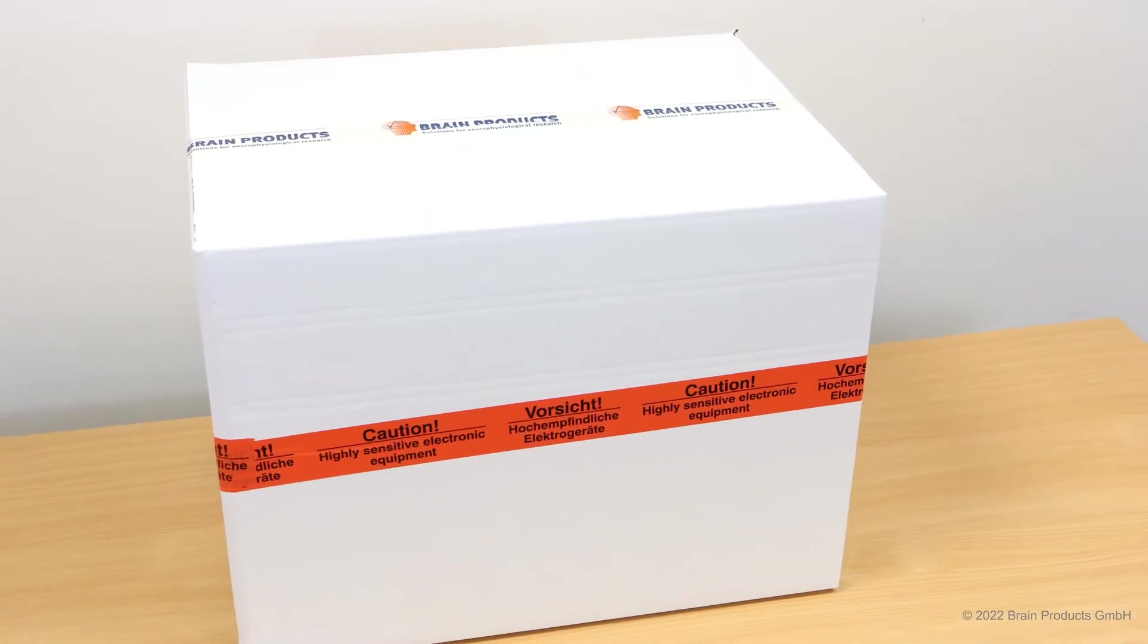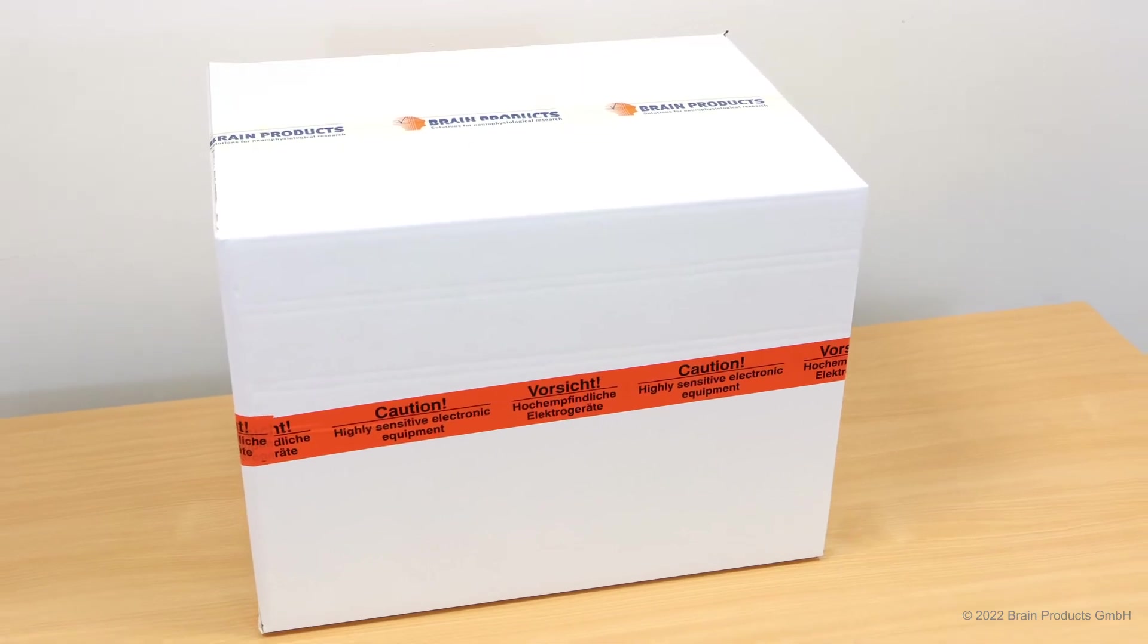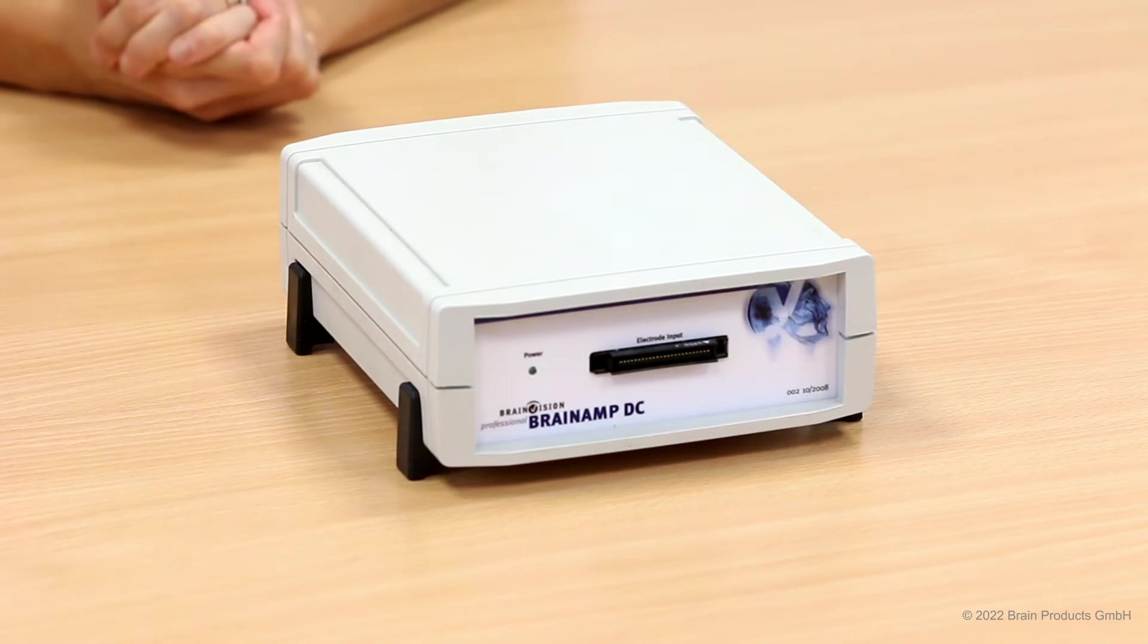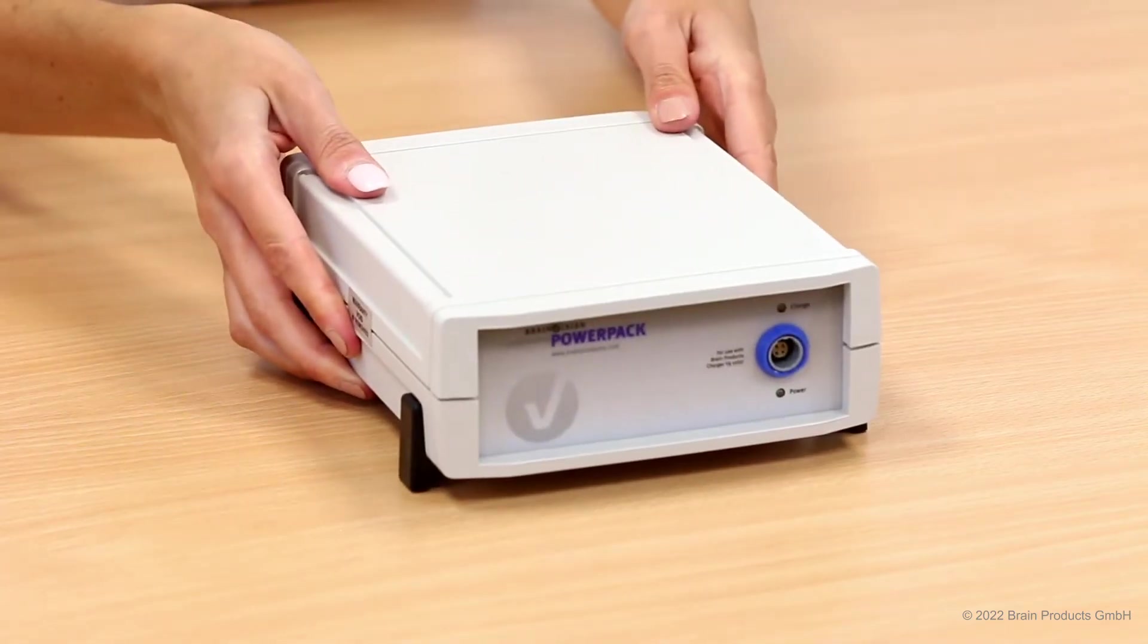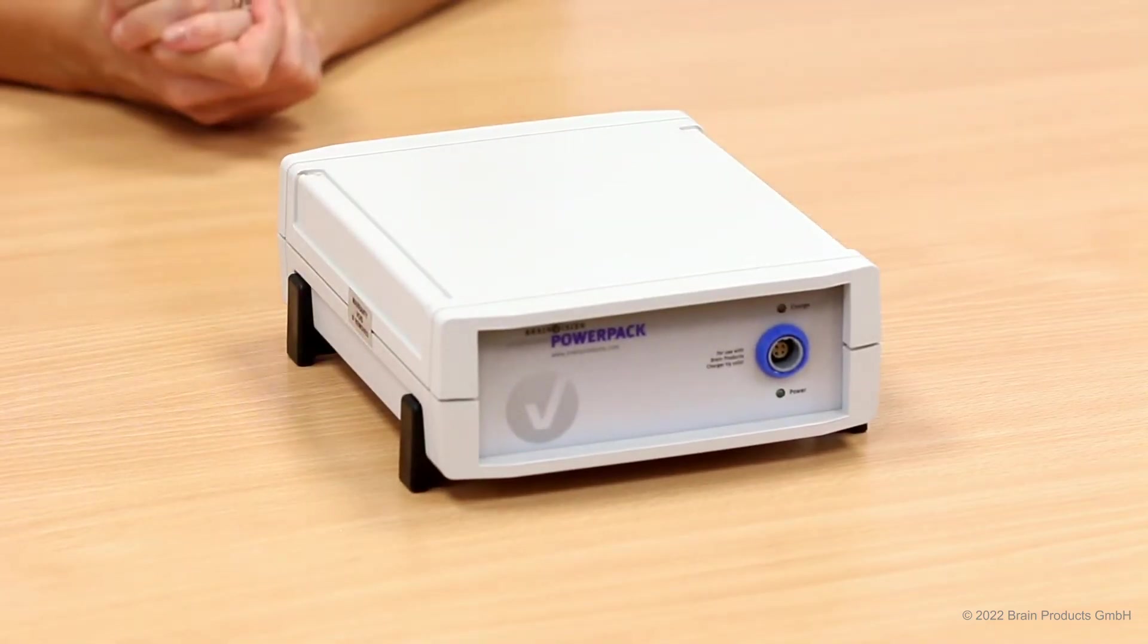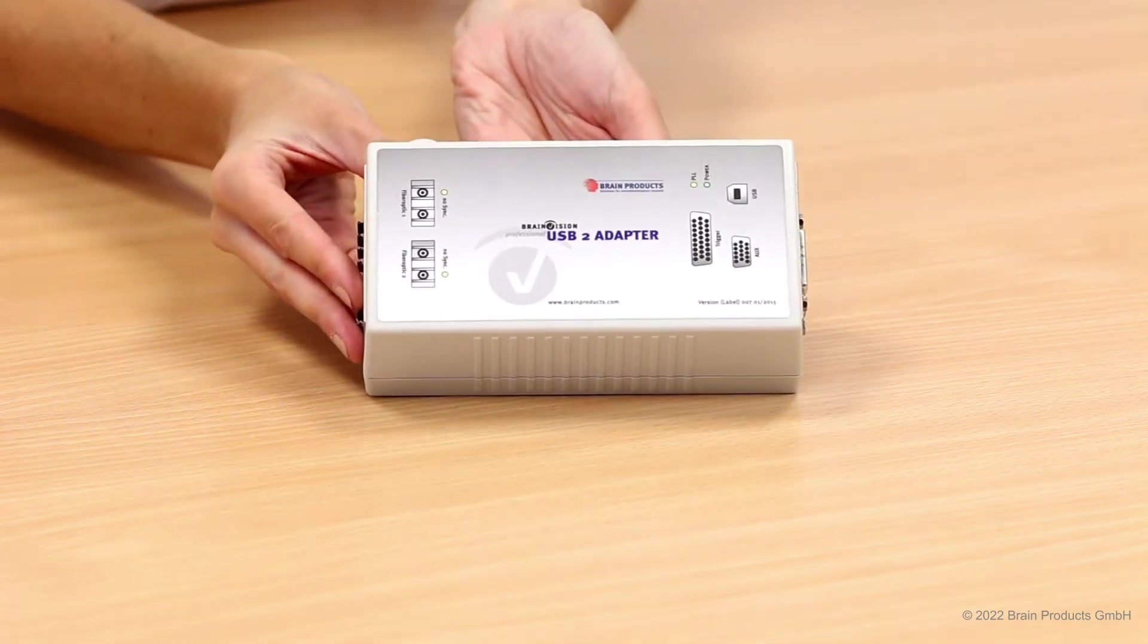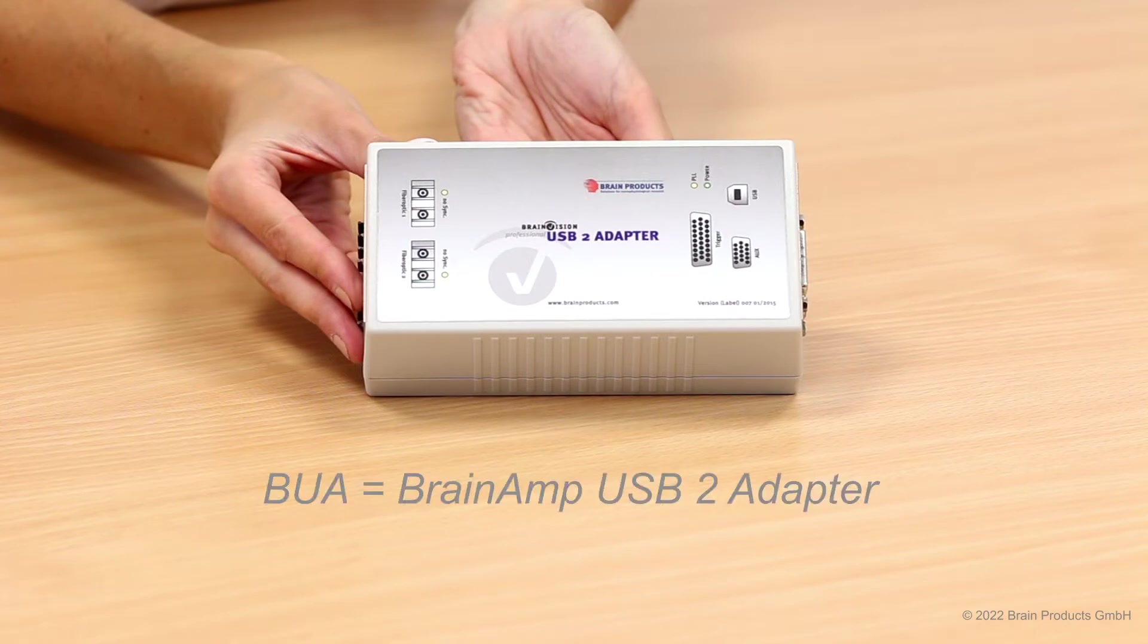Once your package arrives, you will find the following items in the box: a BrainAmp 32 channel amplifier unit, a power pack which is the rechargeable battery for the BrainAmp amplifier, a BrainAmp USB 2 adapter also called BUA, which serves as the interface between amplifier and computer.